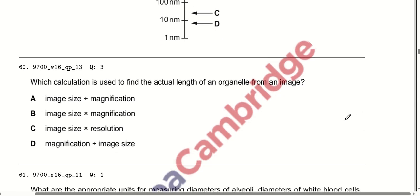Which calculation is used to find the actual length of an organelle from an image? Using the formula: magnification = image size ÷ actual size. When rearranged to find actual length: actual size = image size ÷ magnification. Option A is correct.